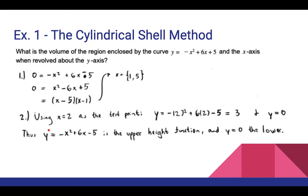We use x equals 2 as a test point between x equals 1 and x equals 5 to determine our upper and lower height functions. At x equals 2, y equals negative (2)squared plus 6 times 2 minus 5, which gives y equals 3. For the x-axis, y equals 0. So y equals negative x squared plus 6x minus 5 is the upper height function, and y equals 0 is the lower height function.